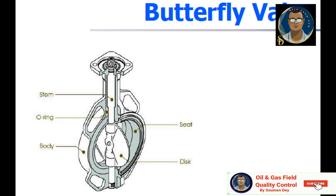A butterfly valve consists of a disc mounted on a stem in the flow path within the valve body. The body is usually flanged, of the lug or wafer type. A quarter-turn of the stem changes the valve from fully closed to completely open. Butterfly valves are most often used in low-pressure service for coarse flow control. Advantages: compact design requiring considerably less space compared to gate or globe valves, lightweight, quick-acting, available in large sizes from 1.5 NPS to 100, and has low pressure drop with high pressure recovery. Disadvantages: throttling service is limited to low differential pressure, cavitation and choked flow are potential concerns, and the disc movement is unguided and affected by flow turbulence.